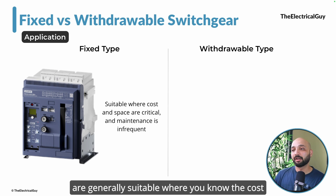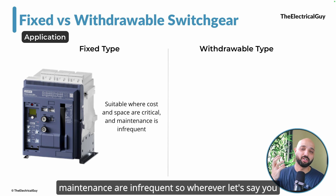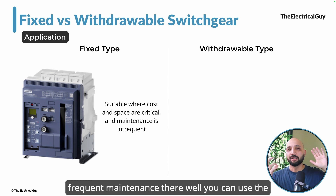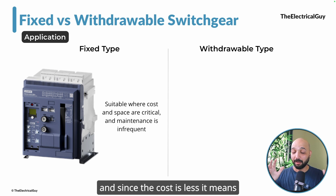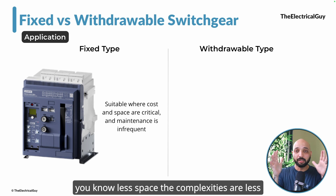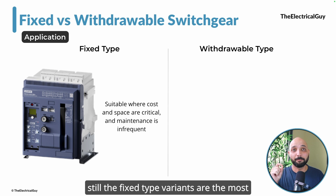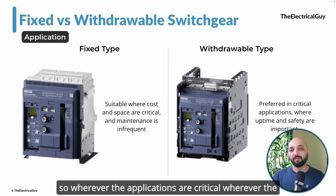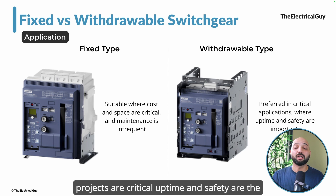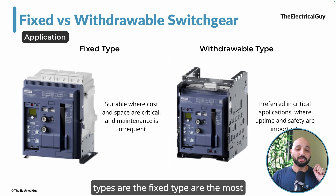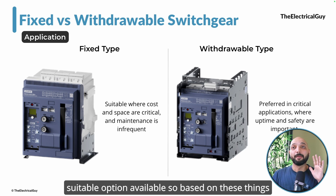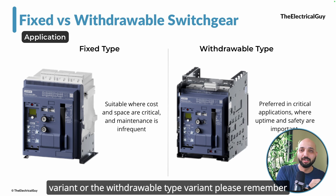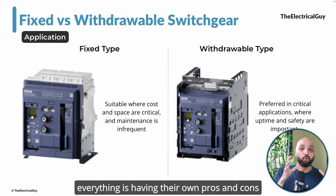Regarding application: fixed type variants are suitable where cost and space are critical and maintenance is infrequent — for example, simple unmanned transformer substations. Despite higher cost and complexity of withdrawable types, fixed type variants are still the most sold. Withdrawable types are the best choice where applications are critical and uptime and safety are the most important parameters, such as critical industrial facilities and hospitals.